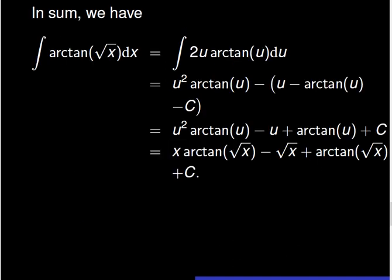In sum, the integral of arctangent of square root of x is equal to the integral of 2u times arctangent of u du, which is equal to u squared times arctangent of u, minus u plus arctangent of u, plus a constant c. When we replace u by square root of x, the final expression of the antiderivative is x times arctangent of square root of x, minus square root of x, plus arctangent of square root of x, plus a constant c.